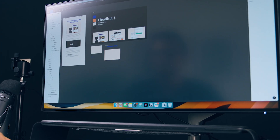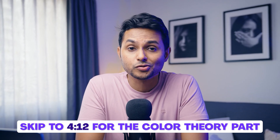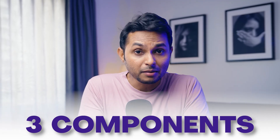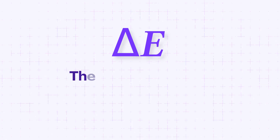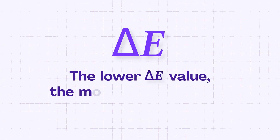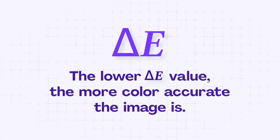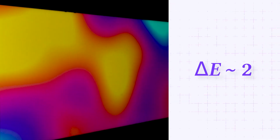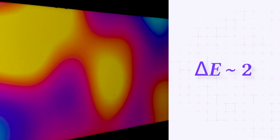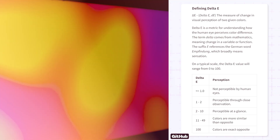BenQ has developed their own technology to deliver accurate colors on professional monitors called AQ Color. This technology consists of three main components. Number one, out-of-the-box accuracy, which is determined by delta E value. In simple terms, the lower the delta E value, the more color accurate the image is. The monitor's delta E value is shockingly almost equal to two, which is extremely color accurate.